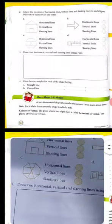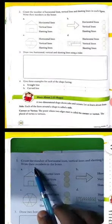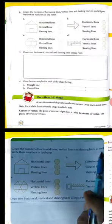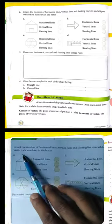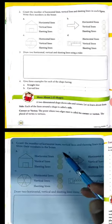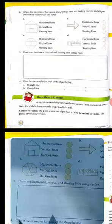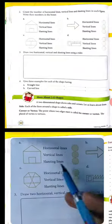Question number two: count the number of horizontal lines, vertical lines, and slanting lines in each figure. Write their number in the box. In this box you can count the horizontal lines, which are flat, and the vertical lines, which are the standing straight lines.